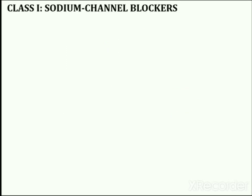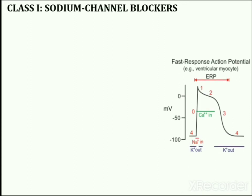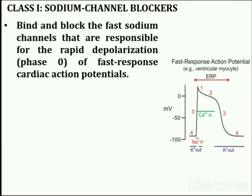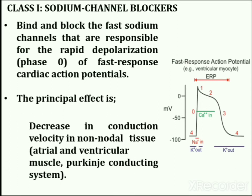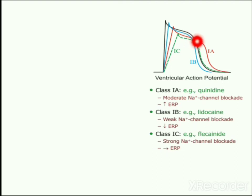Now, mode of action of sodium channel blockers. Sodium channel blockers bind to and block the fast sodium channels that are responsible for the rapid depolarization phase 0 of fast response cardiac action potentials. This type of action potential is found in non-nodal cardiomyocytes, for example atrial and ventricular myocytes and Purkinje tissues. The slope of phase 0 depends on the activation of fast sodium channels and the rapid entry of sodium ions into the cell. Blockage of these channels decreases the slope of phase 0, which also leads to a decrease in the amplitude of action potential.